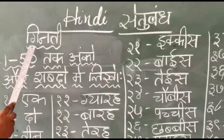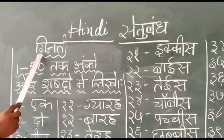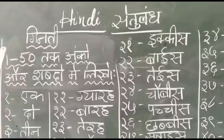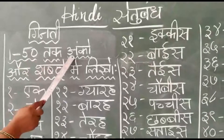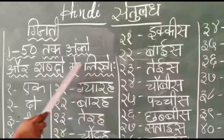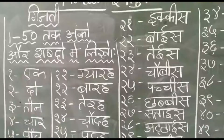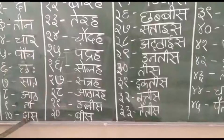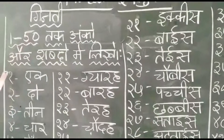Next we are going to learn the numbers both in digits and in words. Give the answer from 1 to 50 and write them in numbers and words. Here we have the digits and here we have the words. We are going to learn from 1 to 50 in numbers and words.